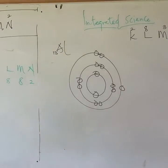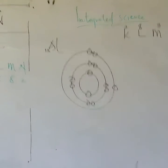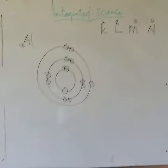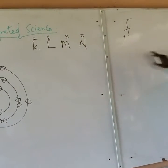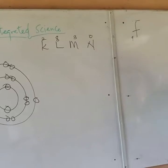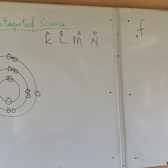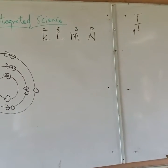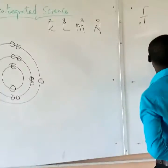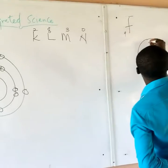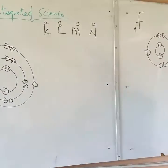Let's draw the next element — fluorine, F, atomic number 9. Let's arrange first: K, L, M, N. The first one, K, takes 2. Minus 9 still leaves a surplus of 7. So L takes 7, because it is not up to 8. So we can't give any to N or M — those will be 0. Now let's draw: K shell gets 1, 2. Then L shell will pick 7: 1, 2, 3, 4, 5, 6, 7. That is the L shell for fluorine.